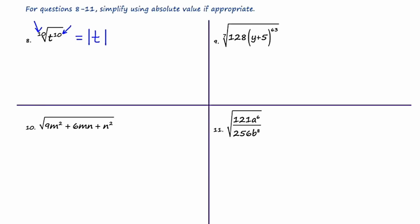Let's move to number nine. The seventh root of 128 — what number times itself seven times is 128? The answer is two. Now we have chunk to the 63rd power. Using the division shortcut: 63 divided by 7 is 9, so we get chunk to the power of nine. Considering even, even, odd, need it — right from the start, the index is seven which is odd, so I don't need absolute value. The answer is two times chunk to the ninth.